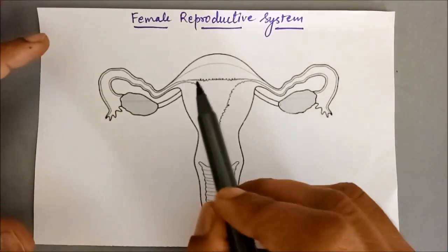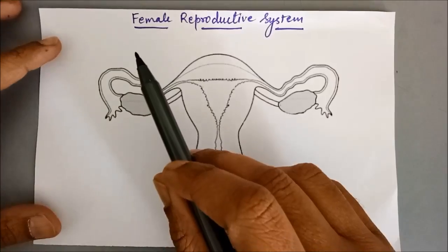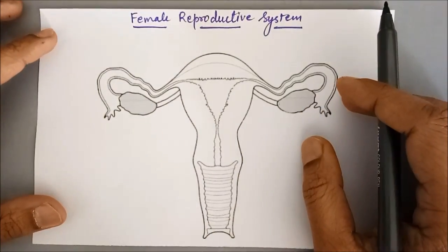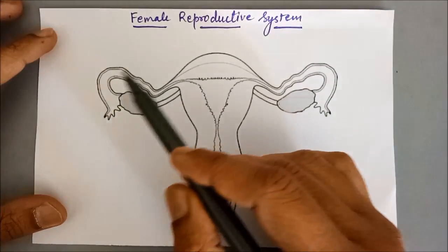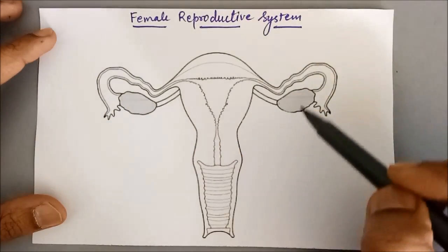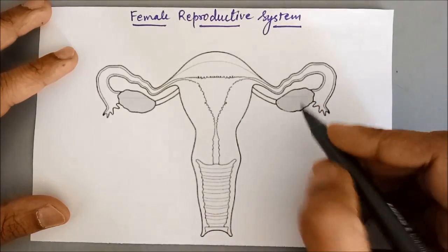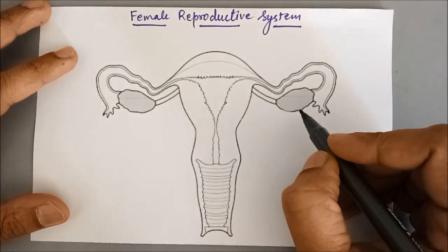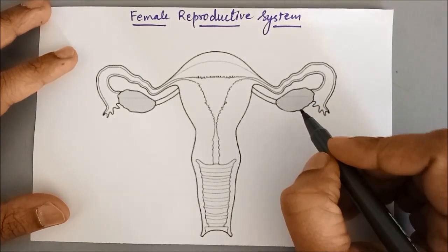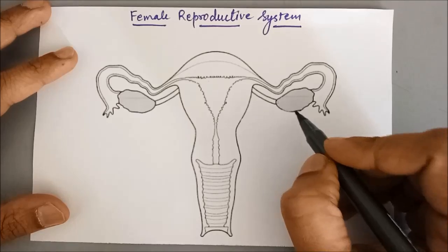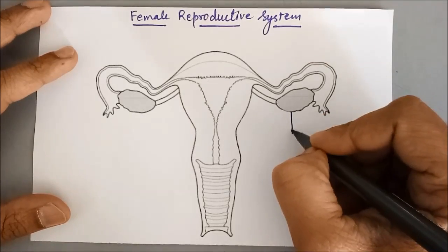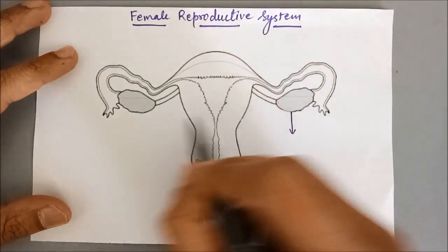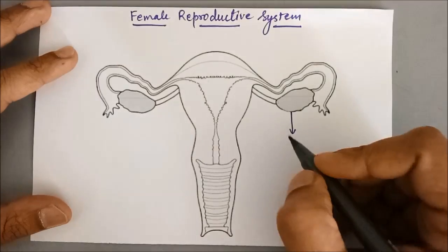Hello everyone, today we are going to discuss the female reproductive system. You can see that the diagram is shown over here. Now this part is the main important organ of the female reproductive system — these are ovaries, a pair of ovaries.